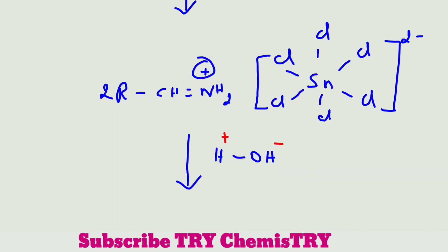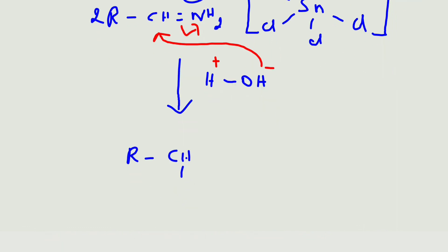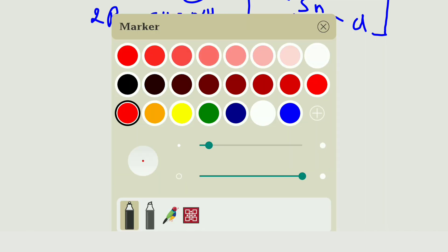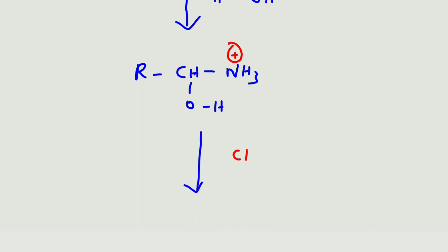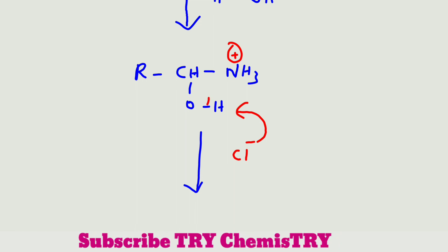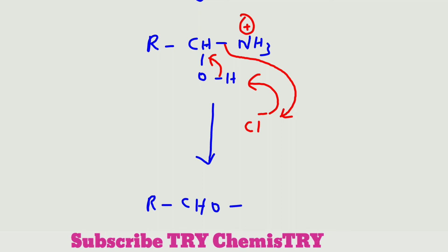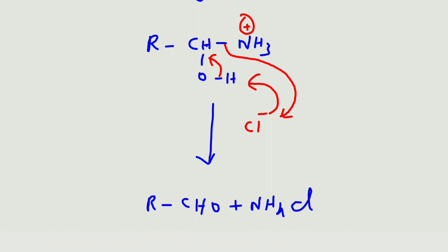When we hydrolyze this product — the aldimine — the nucleophile (water) attacks the electropositive carbon, the double bond becomes a single bond, and we get R–CH(OH)–NH₃⁺. The Cl⁻ attacks the hydrogen, the electrons are donated to carbon, NH₃⁺ attacks the chlorine, and finally we get the aldehyde R–CHO with removal of ammonium chloride.